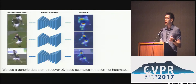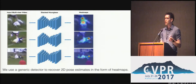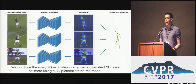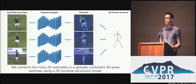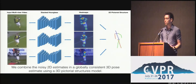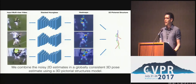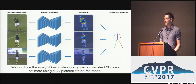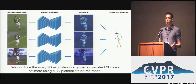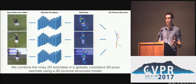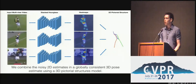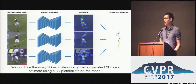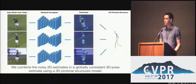These heatmaps only contain information about the single view appearance, so we use a 3D pictorial structures model to combine the single view estimates into a globally consistent 3D pose. This model estimates the posterior distribution of each joint over the 3D space, where we use the mean of the posterior as the joint position, while the trace of the covariance matrix can be used as an estimate of the prediction's uncertainty.